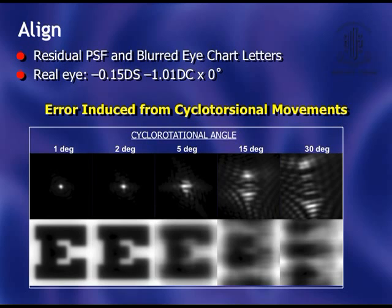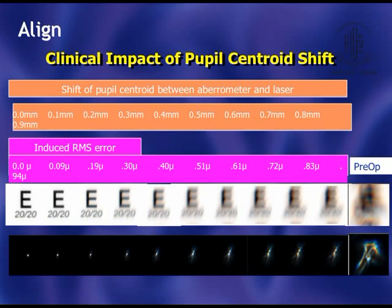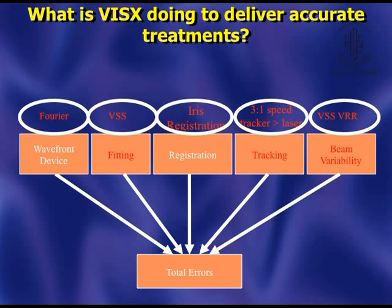If the cyclotorsion is too much — that is more than 10 degrees — it will significantly affect the outcome. The clinical impact of the pupil centroid shift is also very well known, and if the pupil becomes very small, the pupil centroid shifts significantly, and if that is not adjusted for, it induces an RMS error on your treatment. What all these customized laser machines are doing is: they capture the data, analyze it, and use a spot size which is either variable or very small. Then you have iris registration for cyclotorsion and pupil centroid shift, and a tracking system which tracks faster than the laser can deliver. All this will ultimately give you better accuracy.